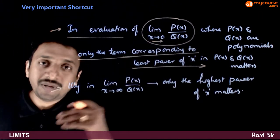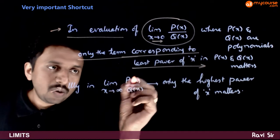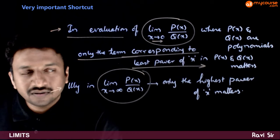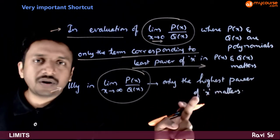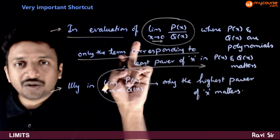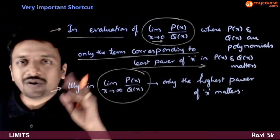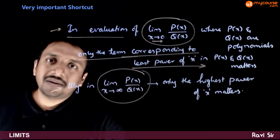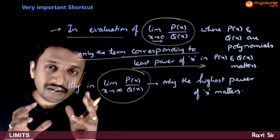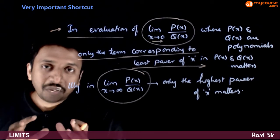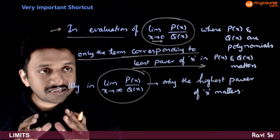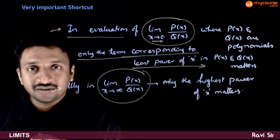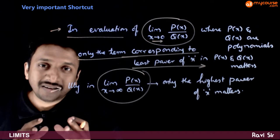Similarly, when x is tending to infinity, we have p(x) by q(x) and only the highest power of x matters. So: when x tends to 0, only the least power of x matters; when x tends to infinity, only the highest power of x matters. This is a very important statement to keep in mind. Now let us see how to use these statements to our advantage by looking at a few examples.